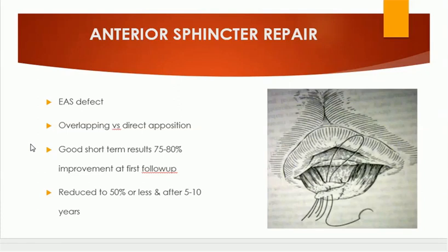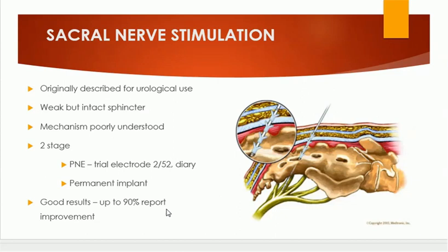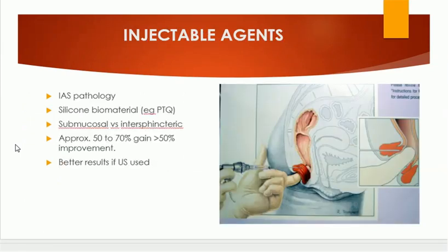Injectable agents are another option — internal anal sphincter pathology can be treated by injecting silicon biomaterial into the internal anal sphincter, either submucosally or in the inter-sphincteric plane. The injection of silicon gives approximately 50 to 70% improvement. Injectable agents in the form of silicon are used, and this is done better under ultrasound control.